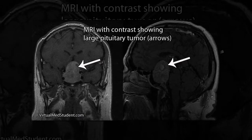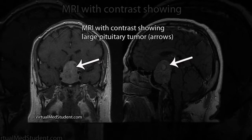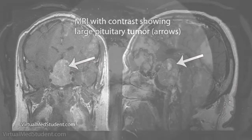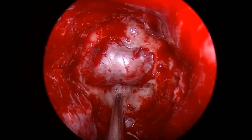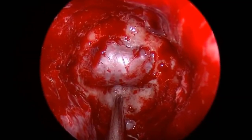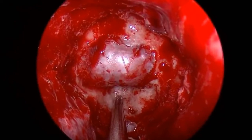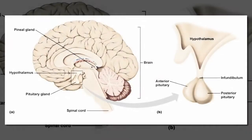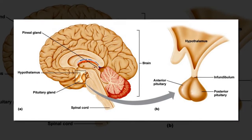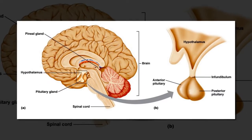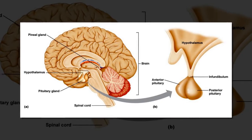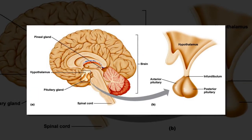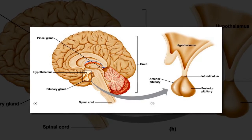Pituitary Tumors. Individuals born with or who develop pituitary tumors may experience different growth patterns than they would otherwise. According to Dr. Daniel Kelly, a neurosurgeon at the John Wayne Cancer Institute in California, a tumor on the pituitary gland could cause the gland to release larger than normal amounts of human growth hormone, resulting in acromegaly, often known as gigantism.